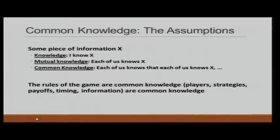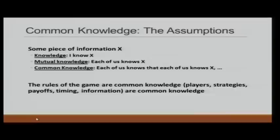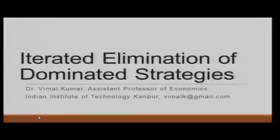Just to make it clear: knowledge means I know X. Mutual knowledge means each of us knows X. And common knowledge goes further — each of us knows that each of us knows, that each of us knows, and so on to infinity. So these are the two assumptions required for game theory: rationality and common knowledge. In the next module, we are going to use some of these things that we have learned.